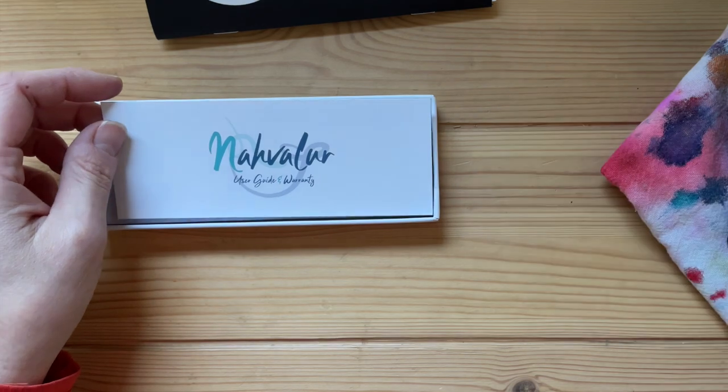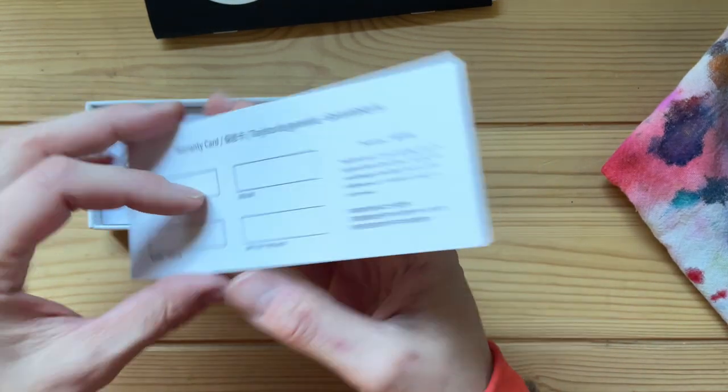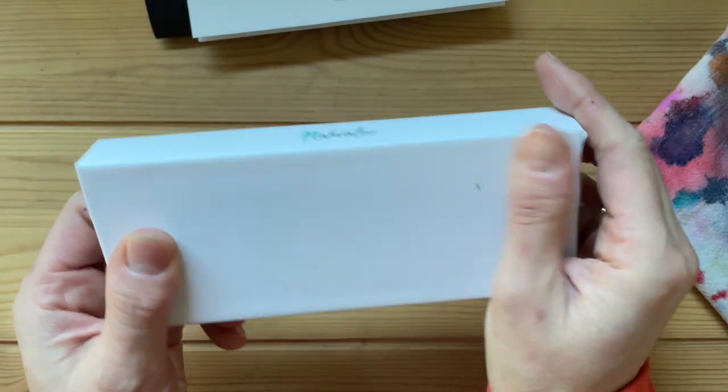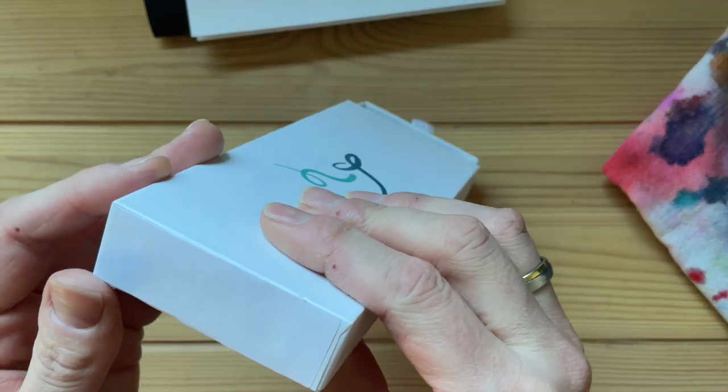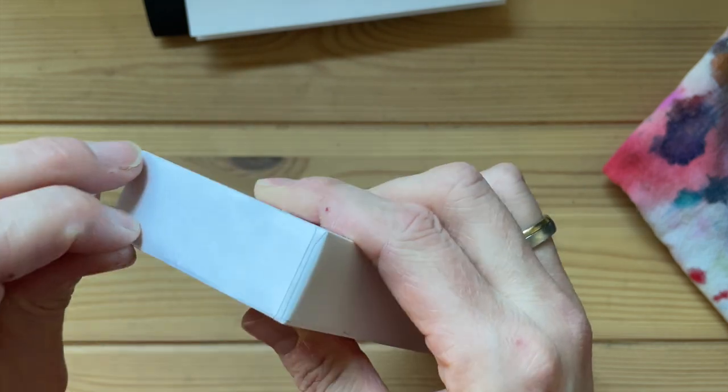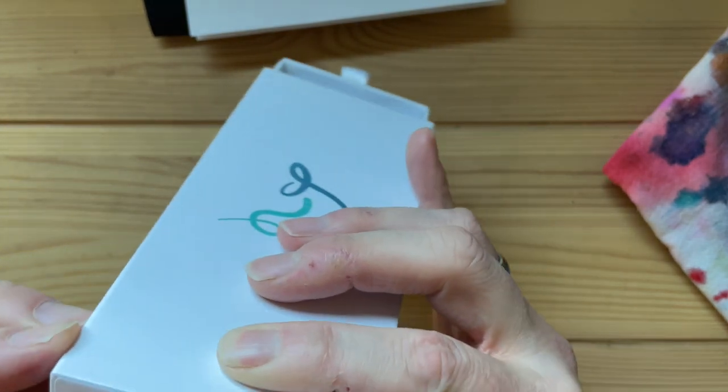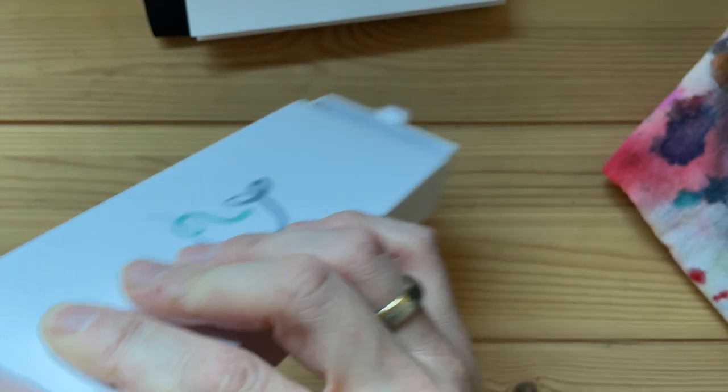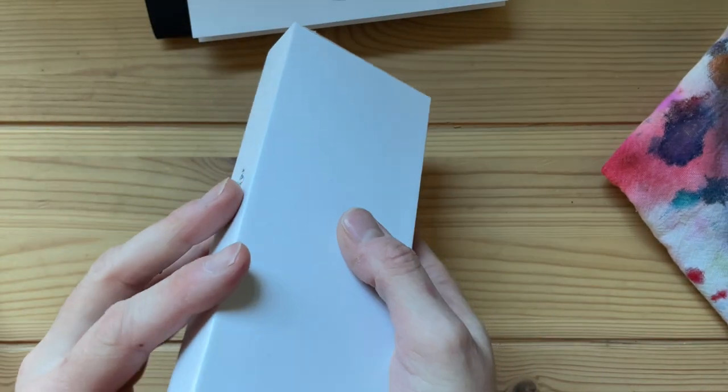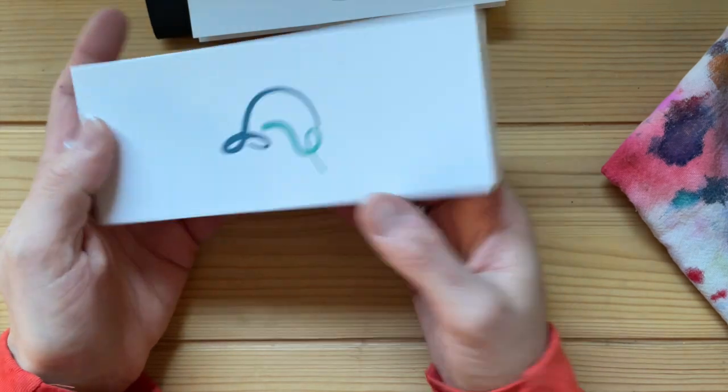There is a user guide and warranty in this box. It's really nice and sturdy packaging. However, I noticed that there's nowhere I can see what is inside. It doesn't say what pen is in here, what nib size.